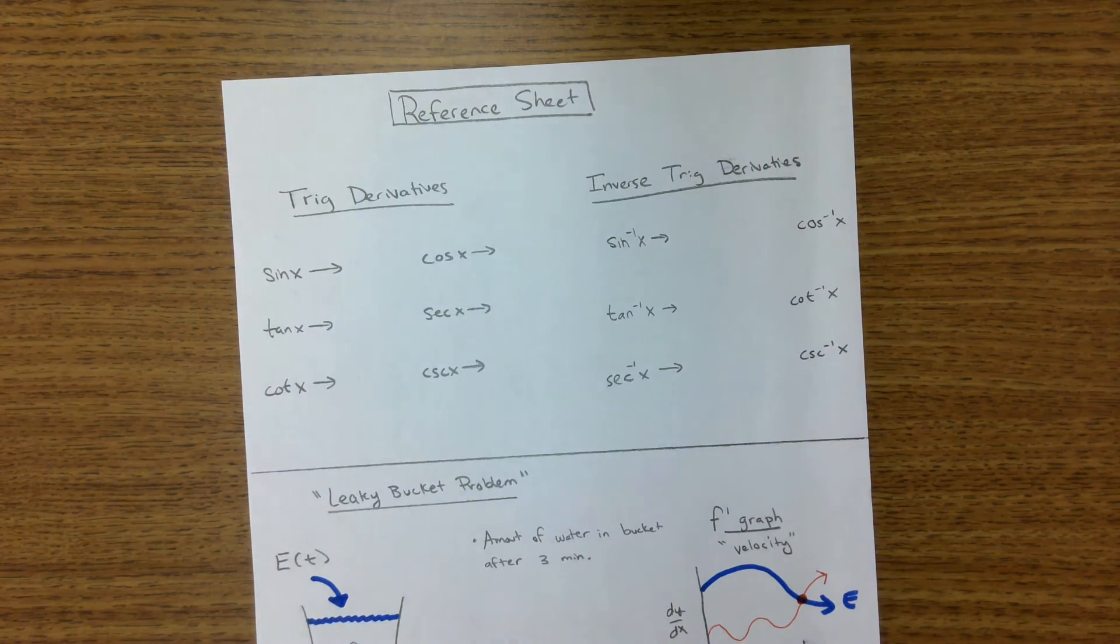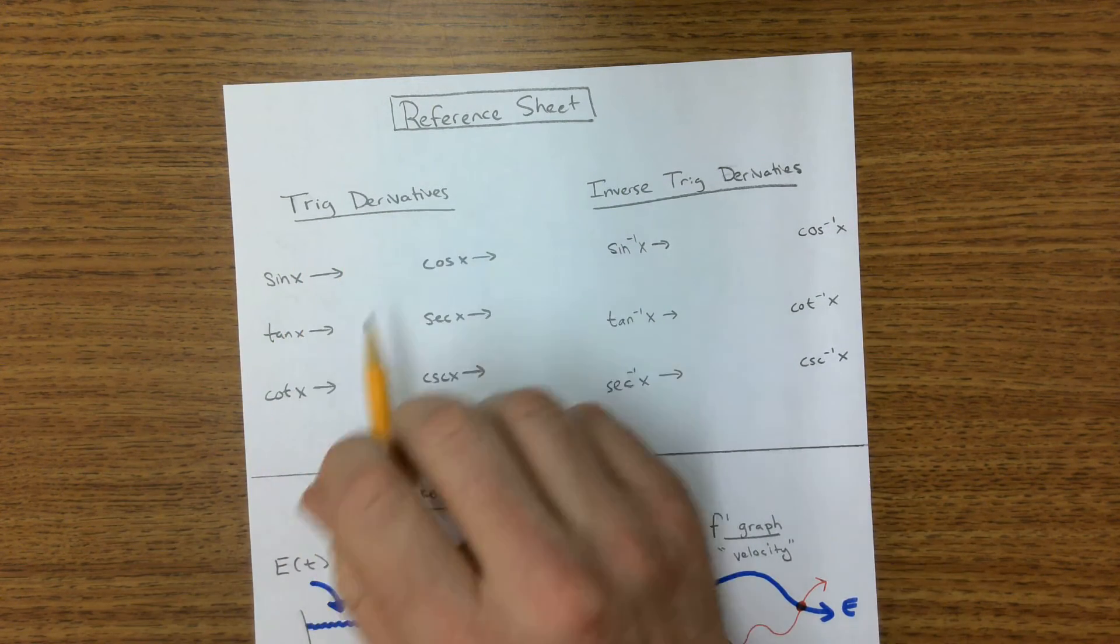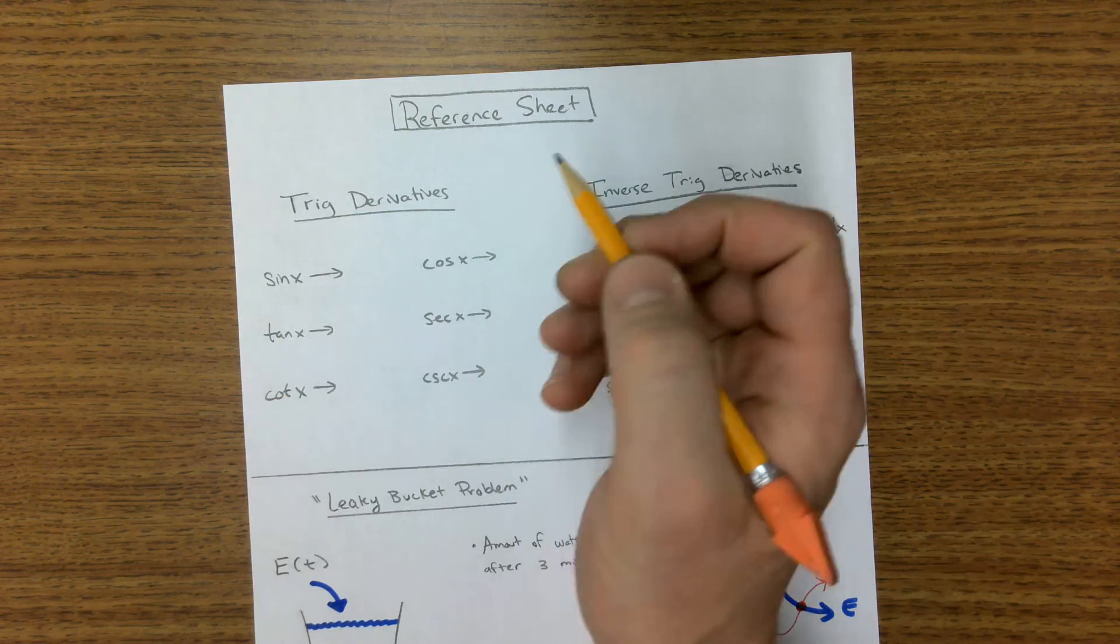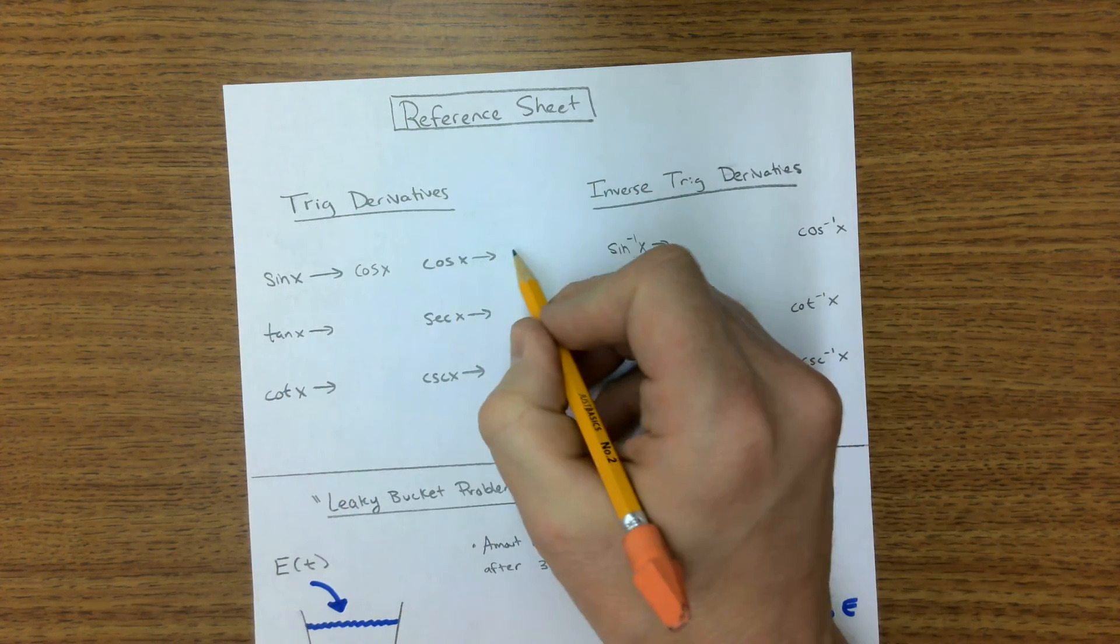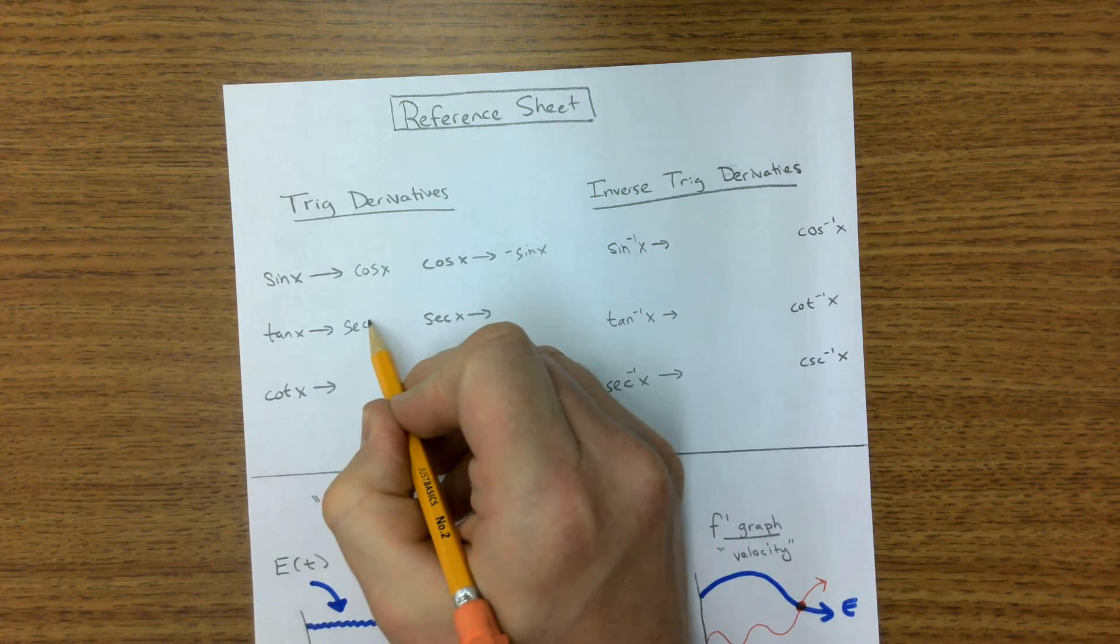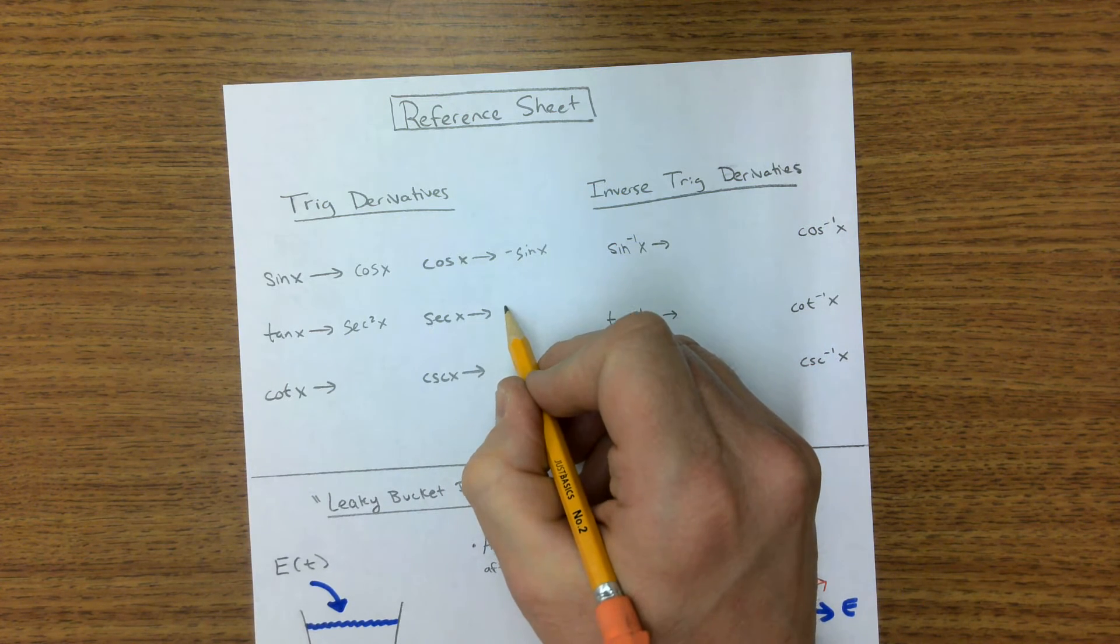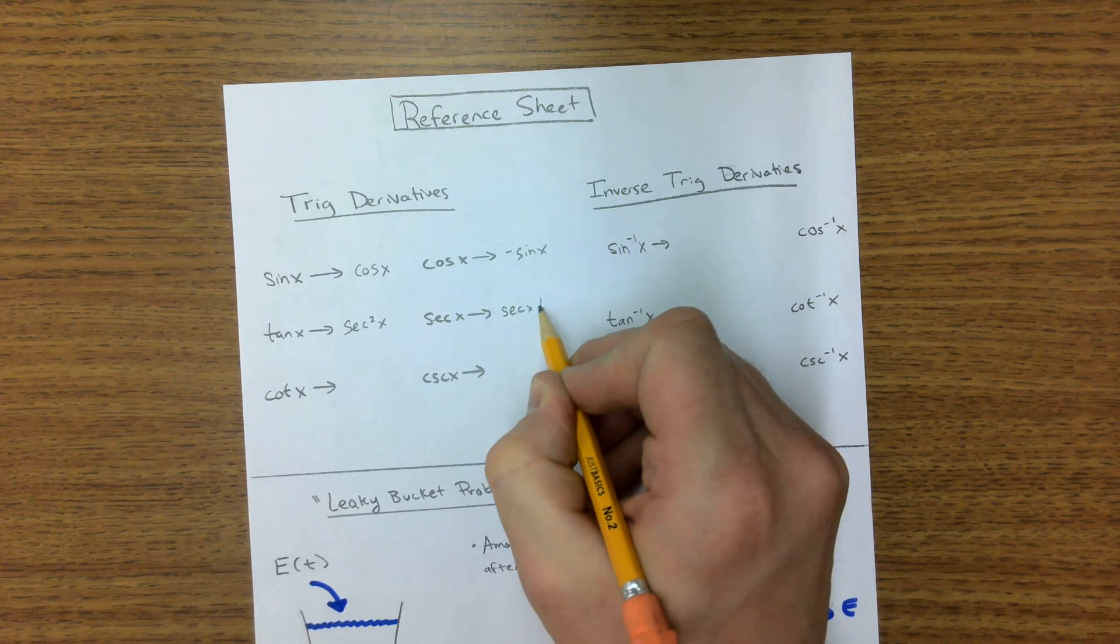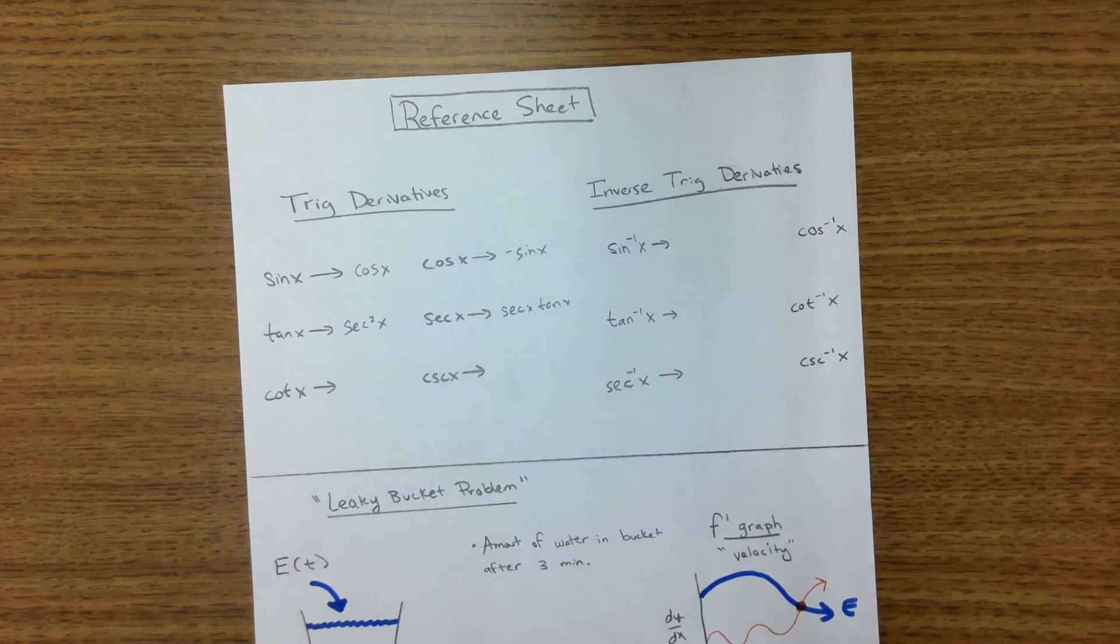For our reference sheet, the stuff we did in class today, we went over the trig derivatives. Trig derivative is again, the sine derivative of sine is cosine and cosine is negative sine. And tangent is secant squared, and secant is secant tangent. Now, how do you remember these? Well, the first two are pretty basic. I think we have all of those.